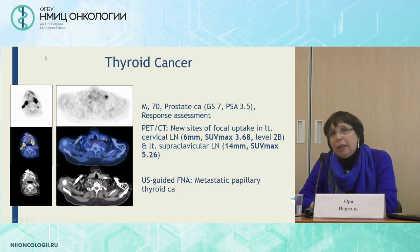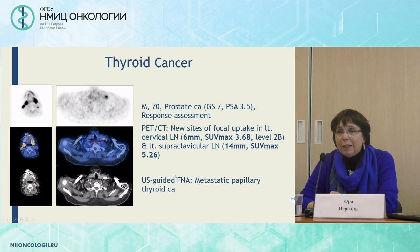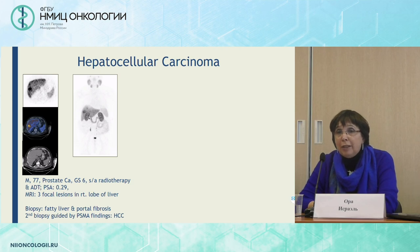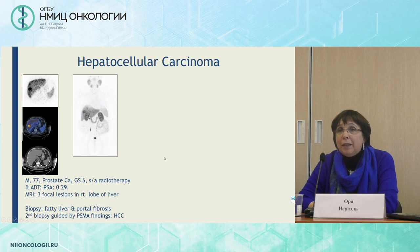These are a few examples from our clinic. This is a patient with prostate cancer where we see uptake in the cervical nodes as well as in the supraclavicular nodes. We were not sure this represented metastasis from prostate cancer, and indeed tissue sampling with ultrasound-guided FNA indicated it was metastatic papillary thyroid cancer. Another patient with prostate cancer after radiotherapy, on follow-up with PSA of 0.29, where MRI showed three to four lesions in the right lobe of the liver with PSMA uptake. The first biopsy guided only by MRI showed only fatty liver and portal fibrosis. The second biopsy guided by PSMA findings indicated the presence of hepatocellular carcinoma.